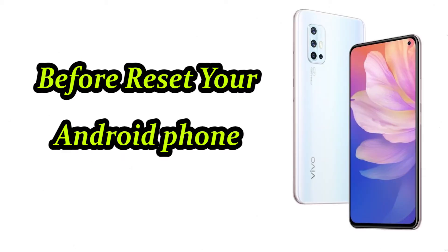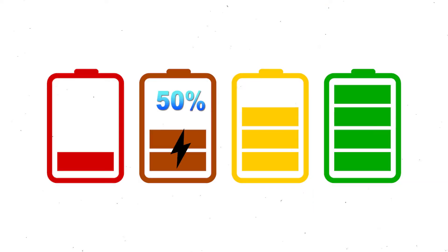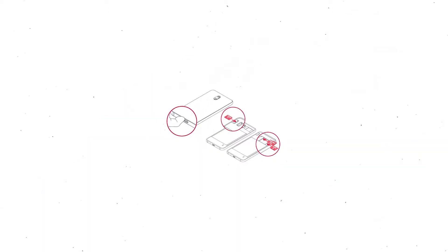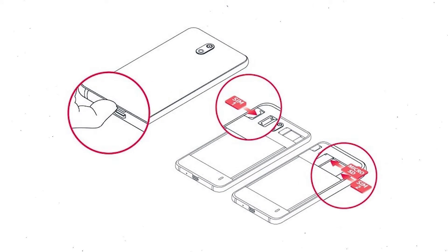Before resetting your Android phone, keep your mobile safe. Make sure the battery is properly charged before resetting — if less than 50%, charge your mobile first. You also need to make sure that the data on your device is backed up so you do not lose valuable photos or documents. Reset will delete all your mobile data, so remove SIMs and SD card first.